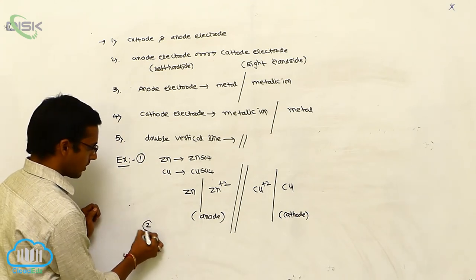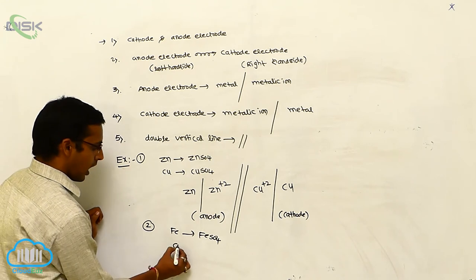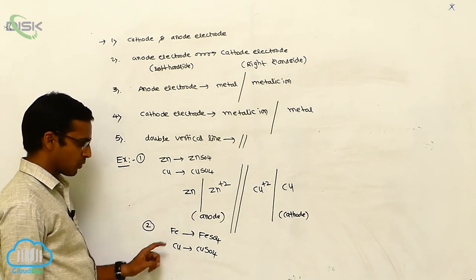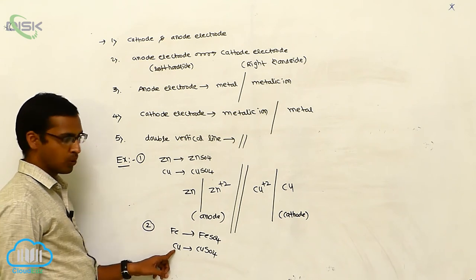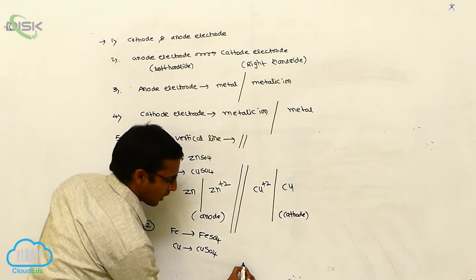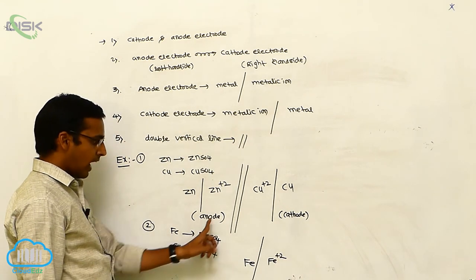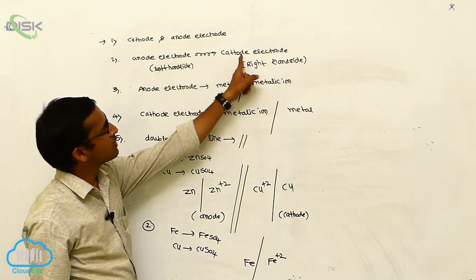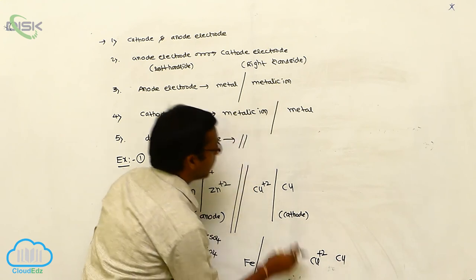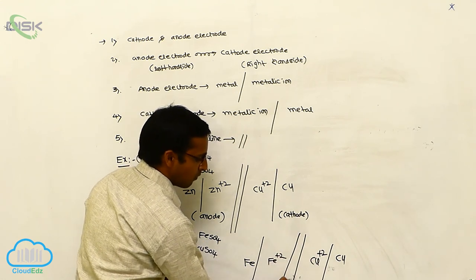Another example: iron is dipped in iron sulfate solution and copper is dipped in copper sulfate solution. Here iron acts as the anode electrode (oxidation) and copper acts as the cathode electrode (reduction). In the representation, first write Fe | Fe²⁺ with a single vertical line — that is your anode electrode — then a double vertical line, followed by Cu²⁺ | Cu with a single vertical line as the cathode electrode. These two are separated by a double vertical line.